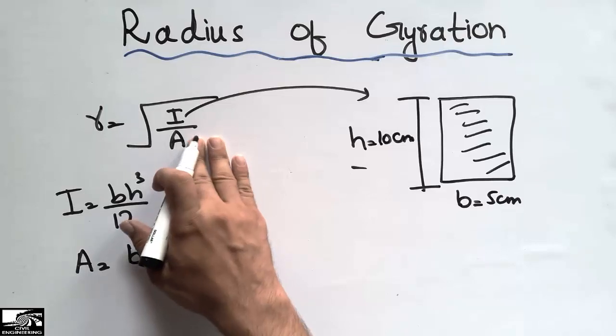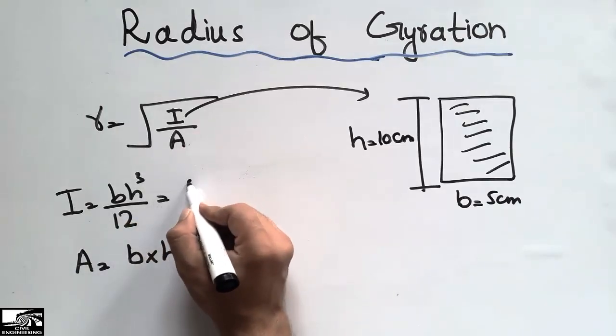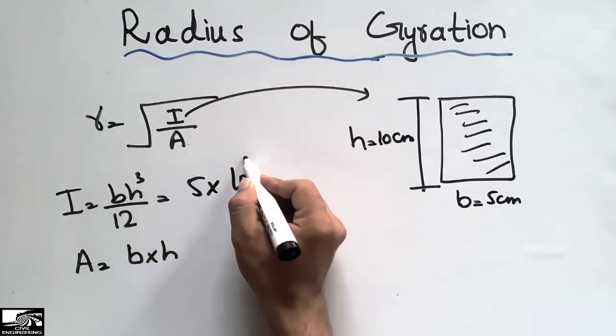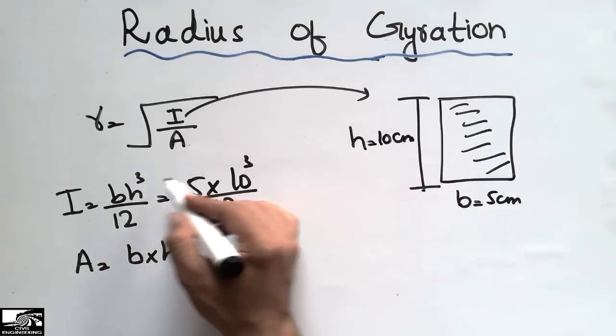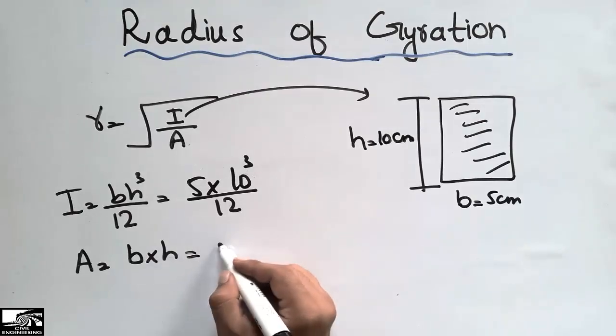The moment of inertia comes out to be 5 times 10³ divided by 12, and the area comes out to be 5 times 10, the depth times width.